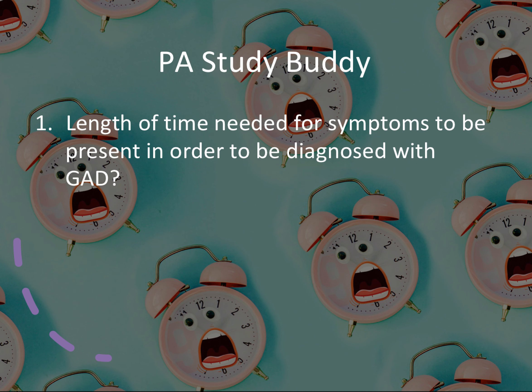Question number one: what is the length of time needed for symptoms to be present in order to be diagnosed with generalized anxiety disorder? They'll tell you the patient has symptoms A, B, C and give you different time options — one month, three months, six months, nine months. If you know the right answer, this is a simple question regardless of how long the stem is. For GAD, symptoms must be present for at least six months.